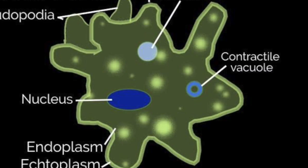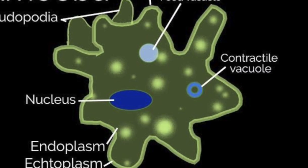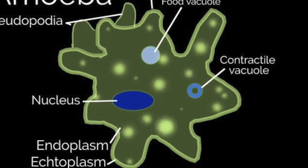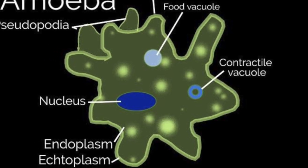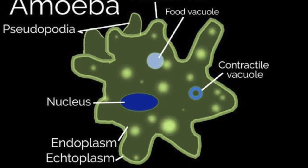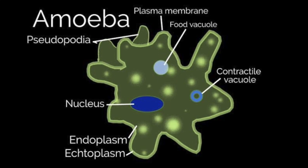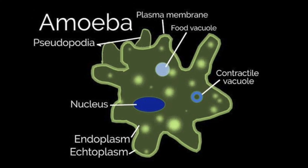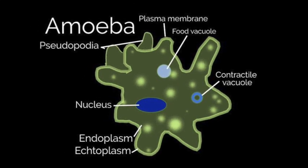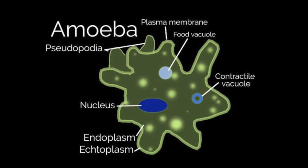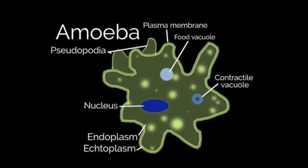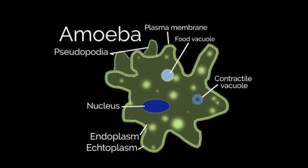The first protist we studied is Amoeba proteus, commonly known as amoeba. Amoeba is under phylum Protozoa. Amoebas use pseudopodia, or false feet, to move, extending their cytoplasm out and pulling the rest of their body forward in a worm-like motion, which is considered the most primitive type of animal movement.